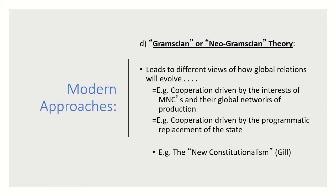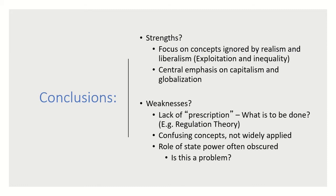Gramscian theory includes different views of how global relations will evolve, such as cooperation driven by the interests of MNCs (multinational corporations) and their global networks of production — we'll discuss this further in a future lecture on production. Conclusions on the strengths and weaknesses of these arguments: strengths include the focus on concepts ignored by realism, mercantilism, and liberalism, such as exploitation and inequality, and a central emphasis on capitalism and globalization.